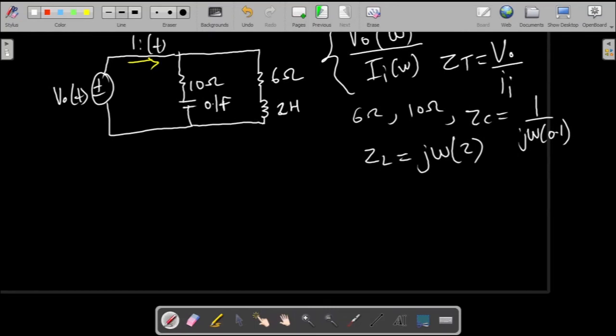Now that we have all of this, let's go ahead and find our Z_T. If you check, it's just this branch in parallel with that branch. They share two nodes, one at the top and one at the bottom, and therefore they're in parallel.